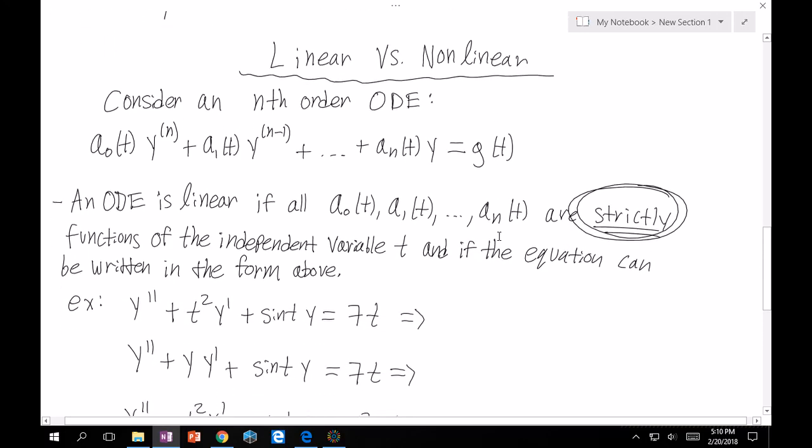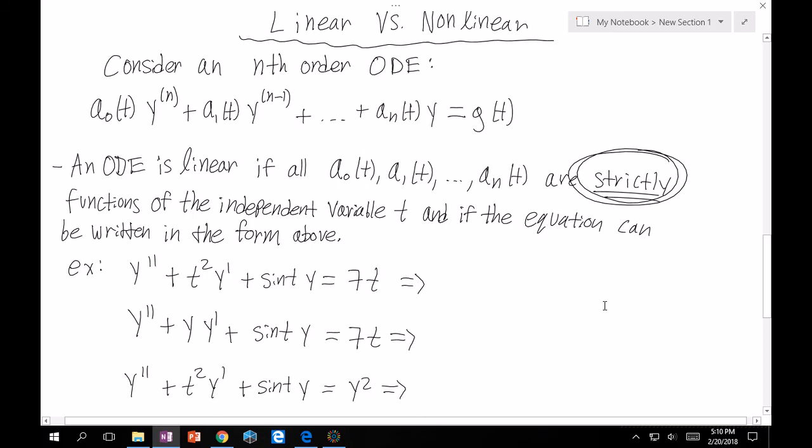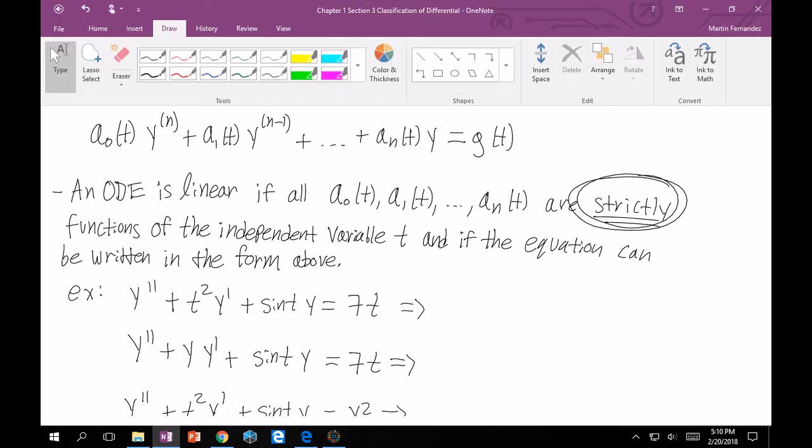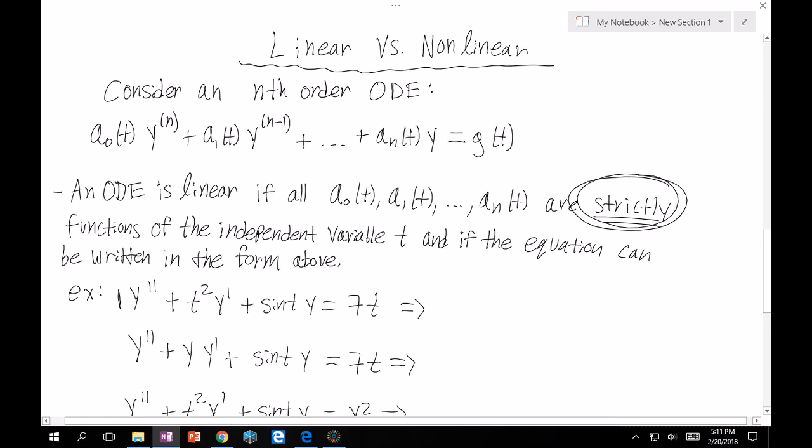Looking at that, let's look at these three equations right here. We have y'' plus t² y' plus sin(t) y equals 7t. Now, just compare this with this top equation. So this y'' has an implied 1 in front of it, and that's okay, that's a function strictly in t, so that part checks out. t² y', that would be like this term over here in the equation. Our t² is our a₁(t), and then y' is still valid. And then our aₙ(t), in this case, would be sin of t, which is still only a function of t, and so multiply by y, that seems good. And then our g(t), in this case, is 7t. So this is linear.